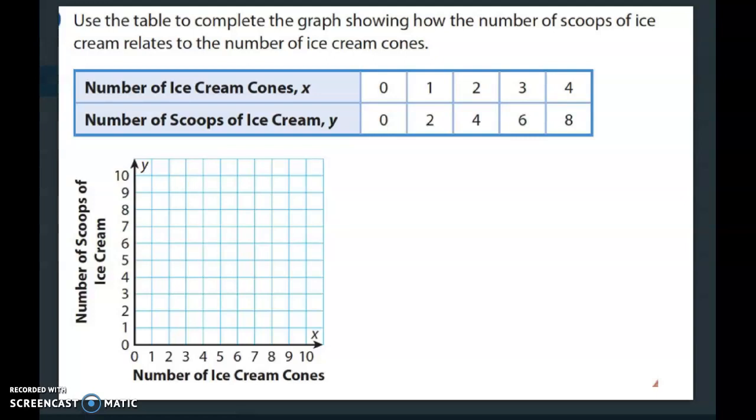It says use the table to complete the graph showing how the number of scoops of ice cream relates to the number of ice cream cones. So look at your table first. It says number of ice cream cones and then based on the number of ice cream cones, that's how many scoops they're scooping out.